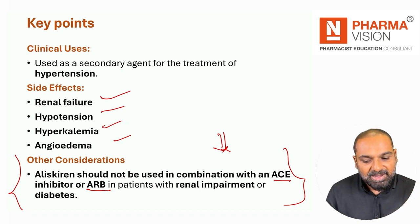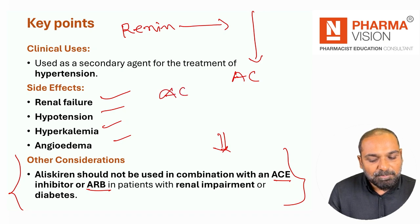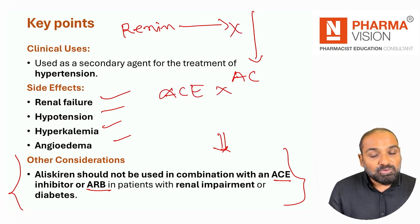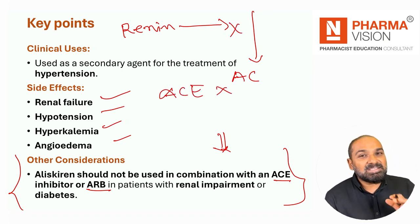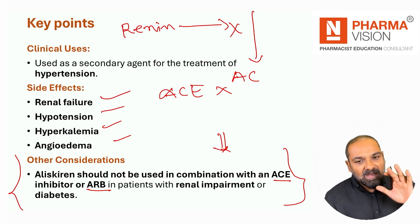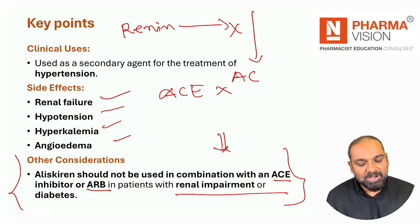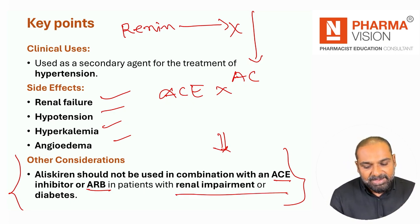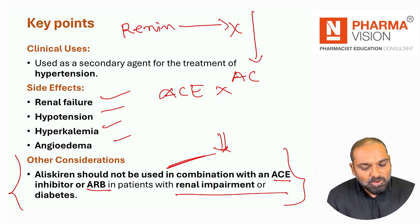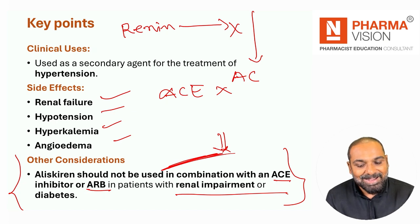Aap ek baar sochye ke aapne renin ki release ko band kar diya, aapne angiotensin ki conversion wala jo part tha woh bhi band kar diya - uska matlab yeh hua ke aapne significantly jo renin angiotensin system ko break maara diya. Agar aap significant break maaro ge to phir problem hogi renal impairment mein. Esi liye, should not be given in combination with ACE inhibitors aur ARBs ke saath.